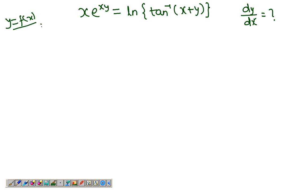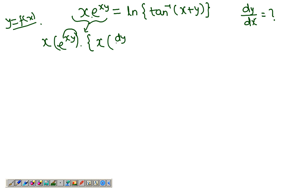We start differentiation from the LHS. We have a product of two functions here, so we apply the product rule. The first function is taken as is, and the derivative of e^(xy) is e^(xy) times, using the chain rule, the derivative of xy. Again we need the product rule here — the first function as it is, the derivative of y which is dy/dx, plus the second function as it is, the derivative of x which is one.